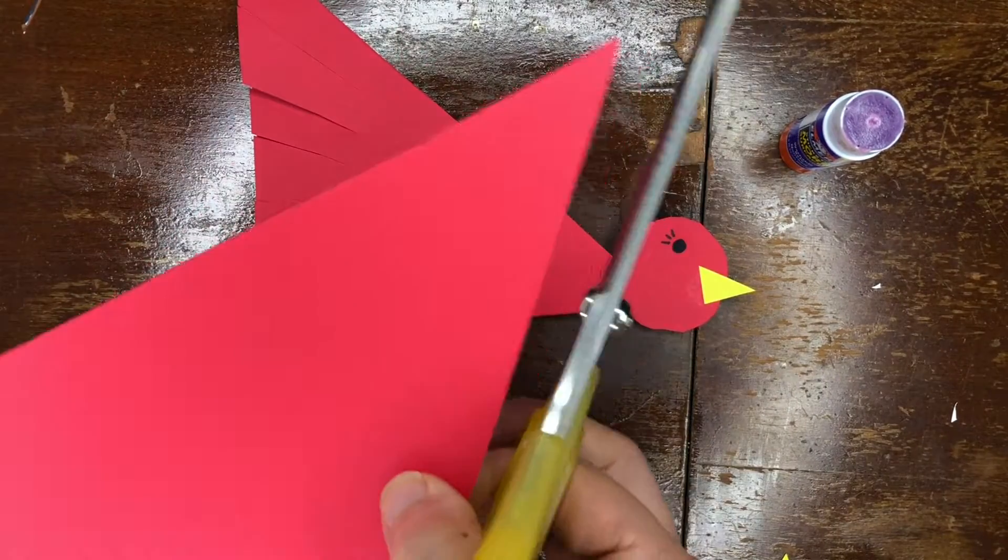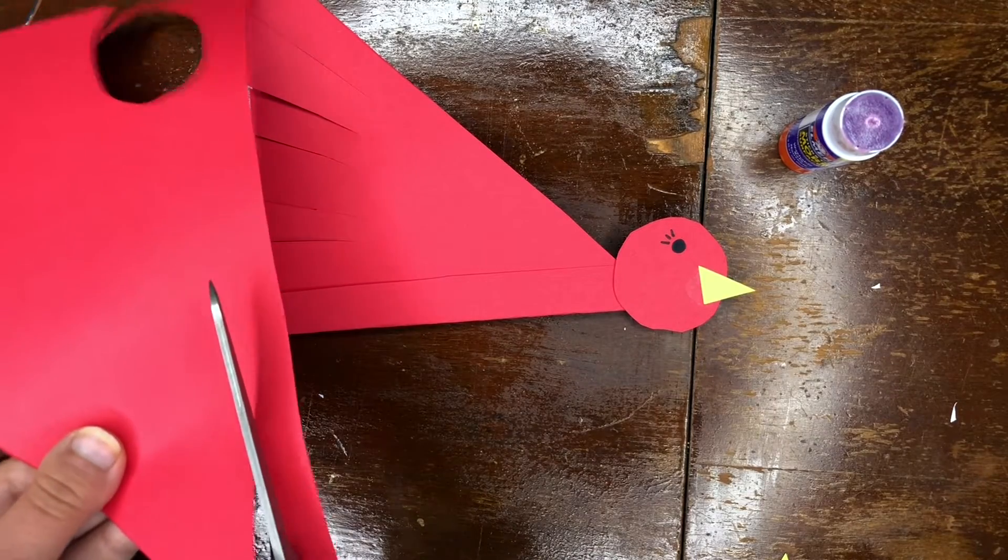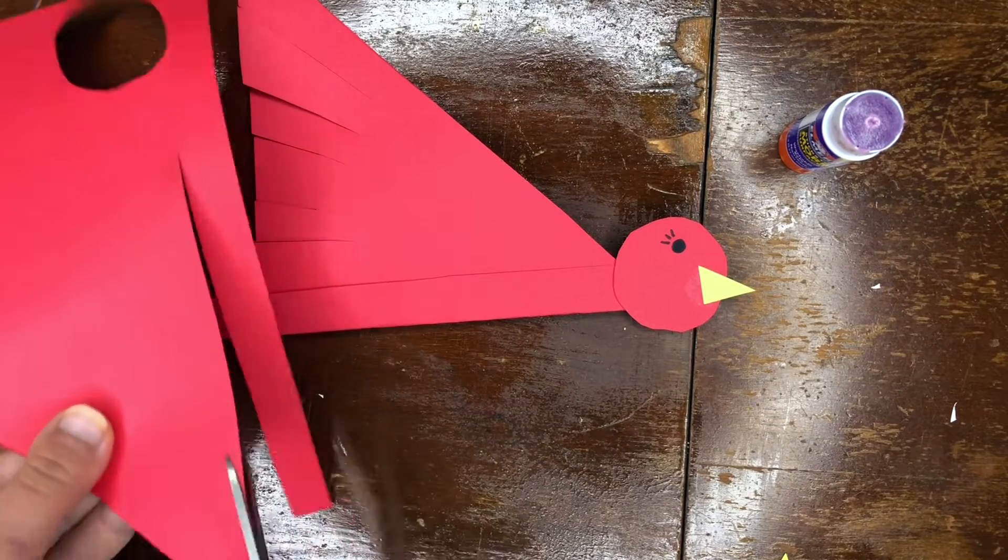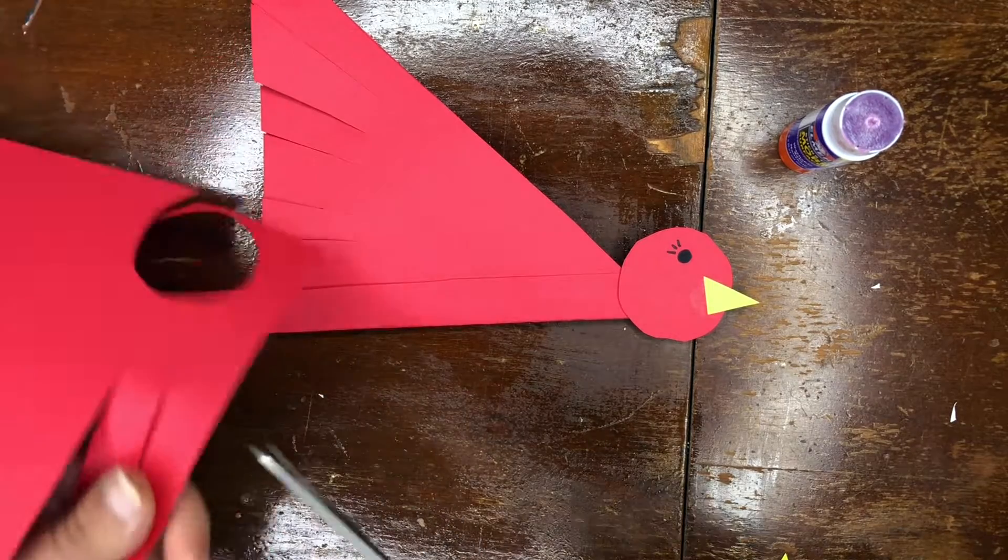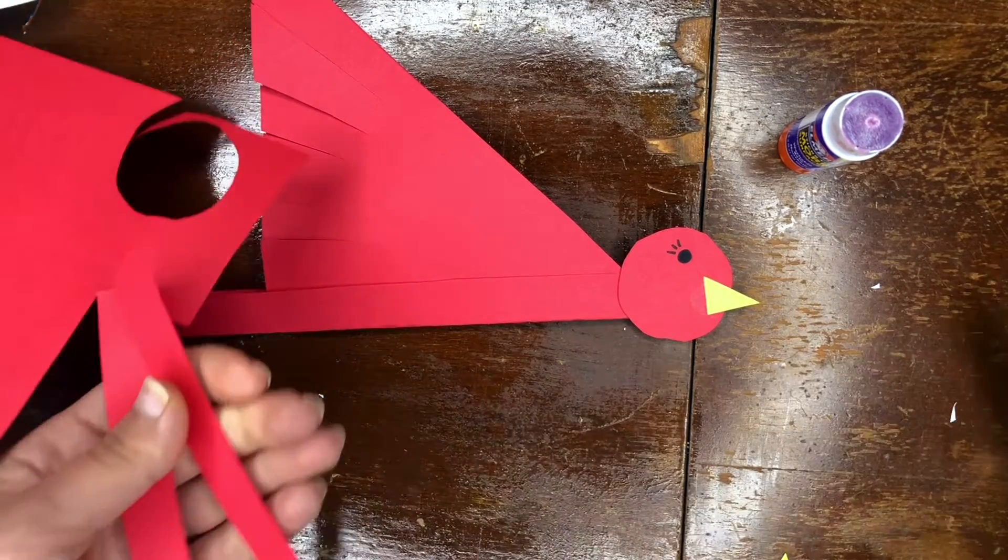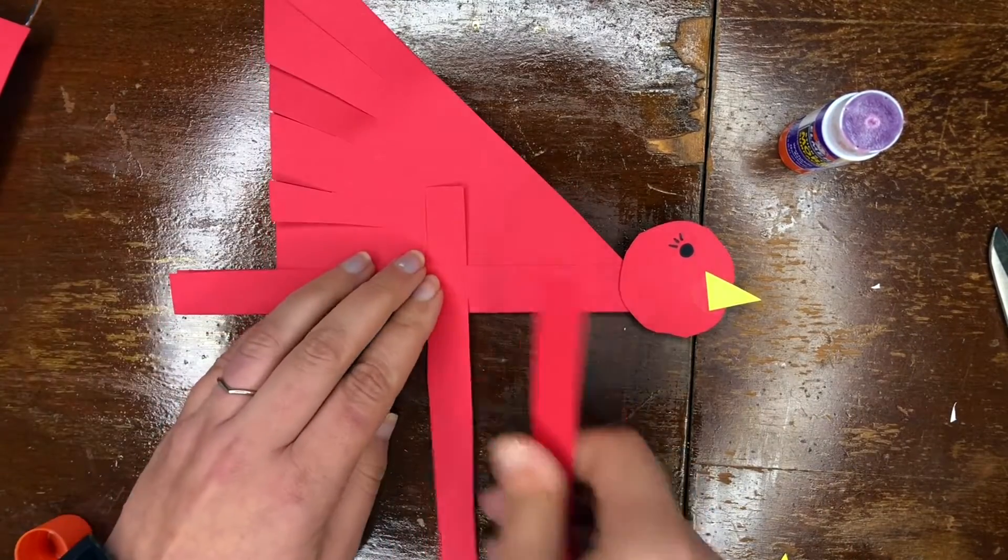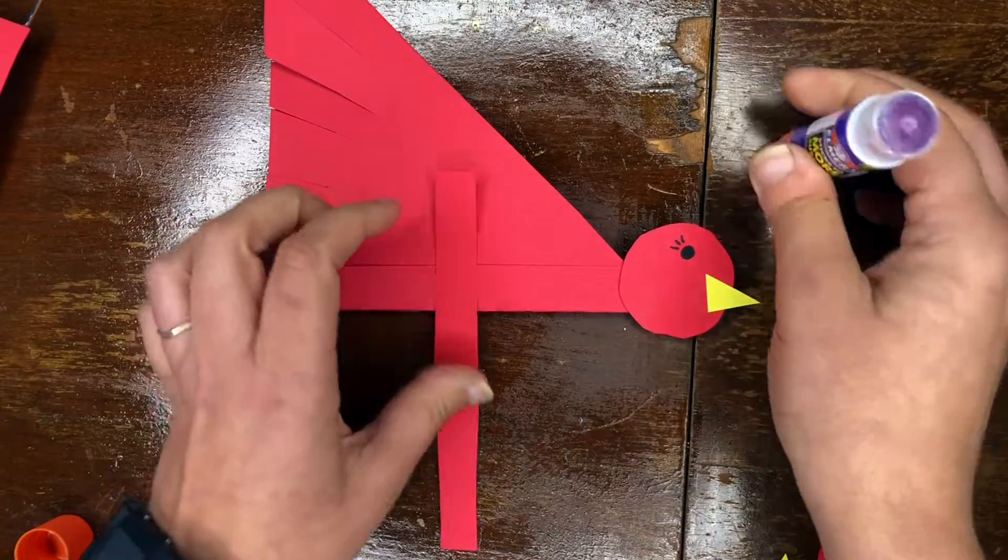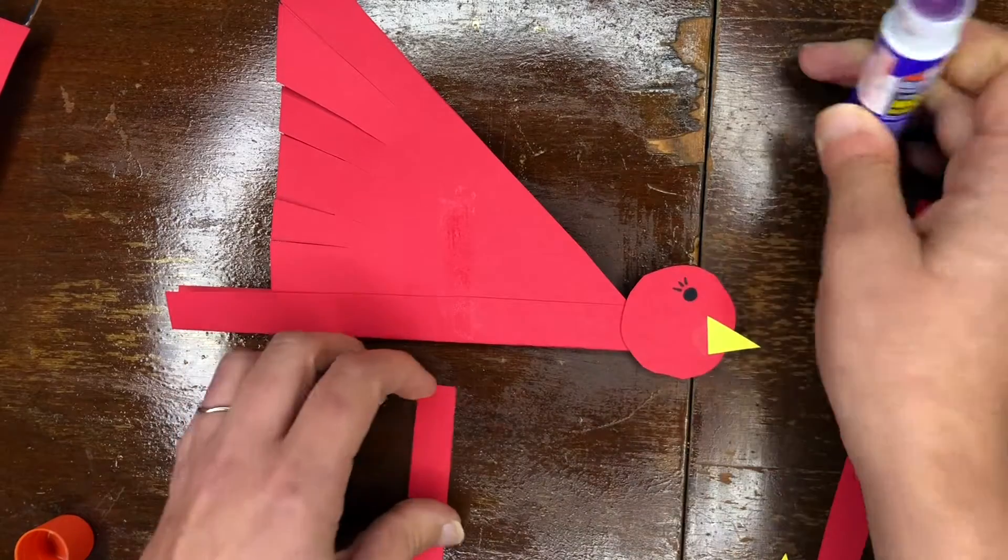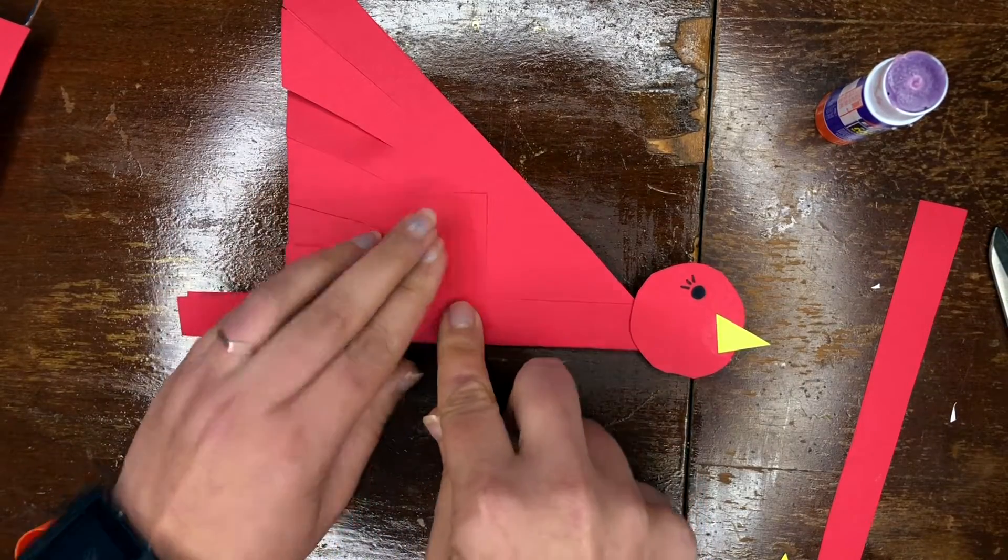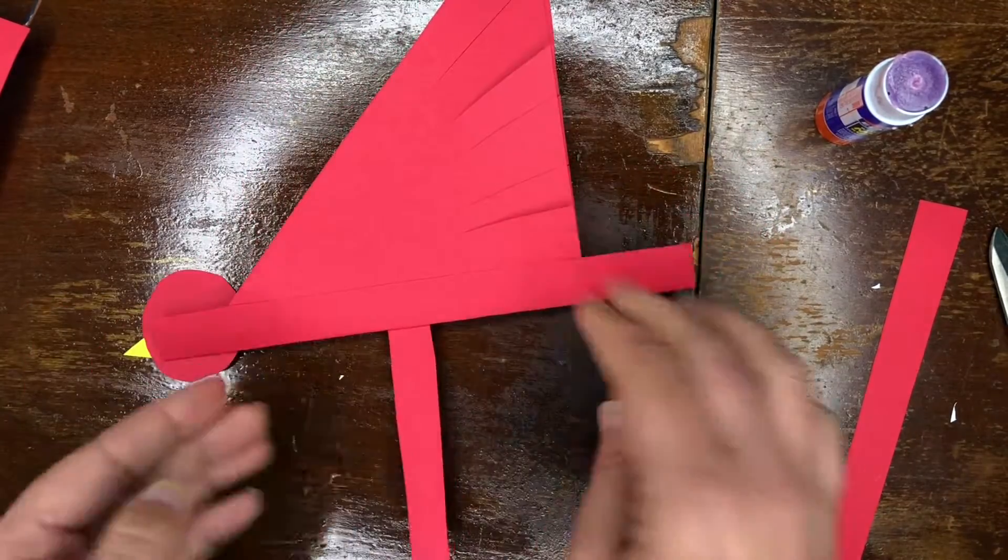And now we're going to take this red paper and we're going to cut out two lines for legs. So just two rectangles. And we're going to be adding these onto the side of our bird. I'm just taking a little bit of glue, running it up, putting this on. Flipping it over. And we're going to want to do it at the same spot on this side.